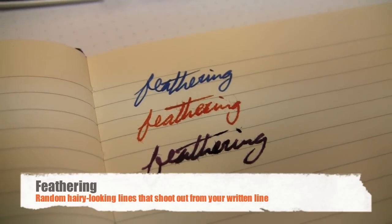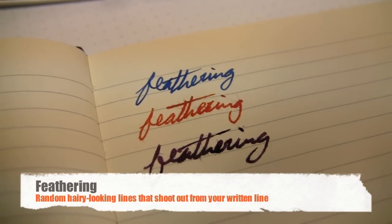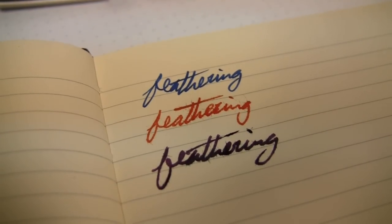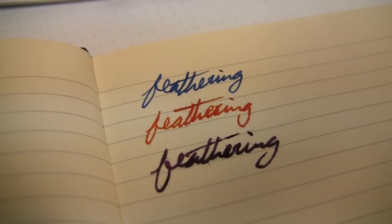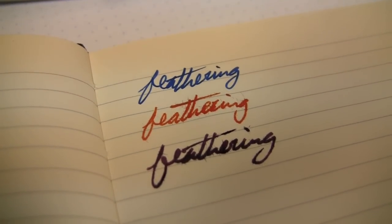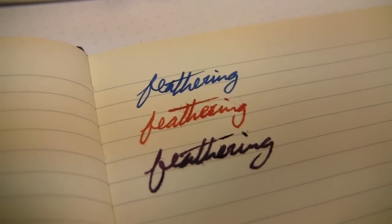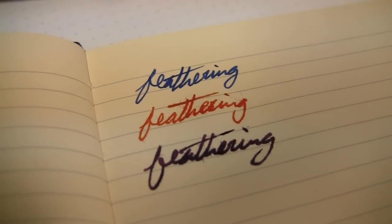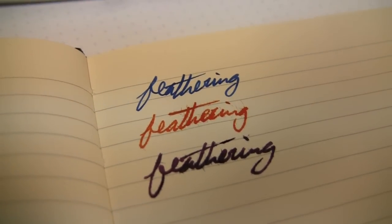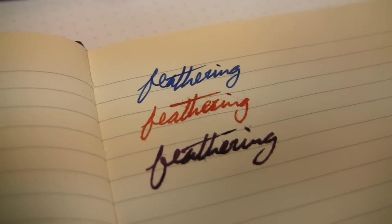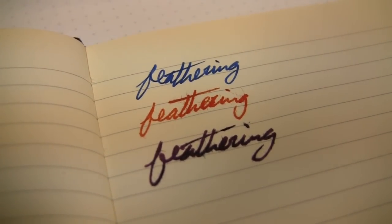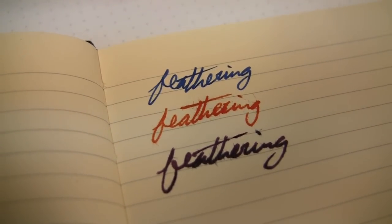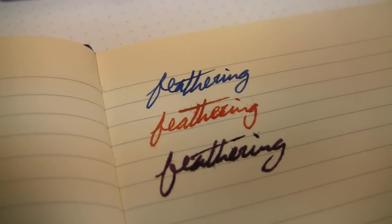What you're seeing here is an example of feathering. These are pretty extreme examples, but it's when you have small offshoots that come out of your ink line while you're writing. Generally it's because you have inexpensive paper or absorbent paper that's not really intended for a liquid fountain pen ink. Pencils and gel inks will usually perform on these pretty well, but when you have a liquid ink it needs a less absorbent paper, otherwise you notice things like feathering.